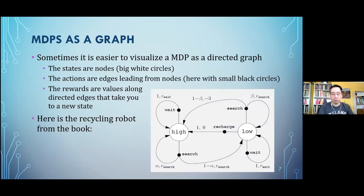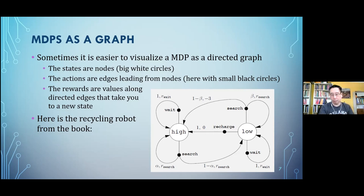Sometimes it's easier to visualize MDPs as a graph. In the book there's a simple example with only two states: high battery and low battery. The actions are shown as small filled black circles, and directed edges show what state you wind up in after taking an action. Some actions are deterministic — one edge coming out. Other times the environment has randomness, where you go one way with certain probability or end up in a different state with another probability.